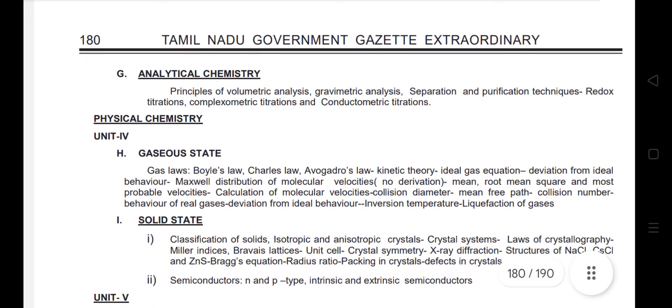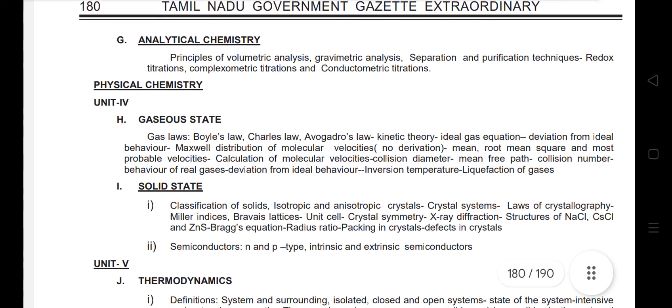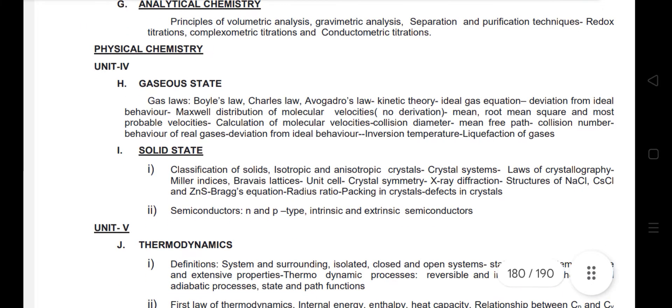Unit 4 is physical chemistry, starting with the gaseous state and solid state. This is at the 12th standard level — basic level. You can learn these topics from the 12th standard textbooks, CBSE books, or NCERT. Revise the gaseous state and solid state chapters thoroughly.